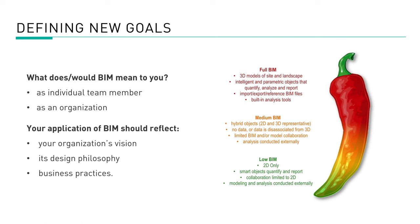One of the first things firms usually try to identify in setting their new goals is how far into BIM they want to go. We've already discussed the holistic nature of BIM in design, but it has to be decided what BIM or landscape BIM means to the individual and to the firm. Should the firm start out at a lower level of BIM and work up? Is the firm committed to fulfilling a mandate that requires a higher level of BIM regardless? The firm's scope of work, design philosophy, and business practices should drive this new goal-setting process.